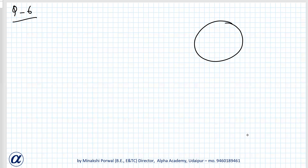The length of a tangent from point A at a distance of 5 cm from the center is 4 cm. So the length of the tangent is 4 cm and the distance from the center is 5 cm. We have to find the radius.